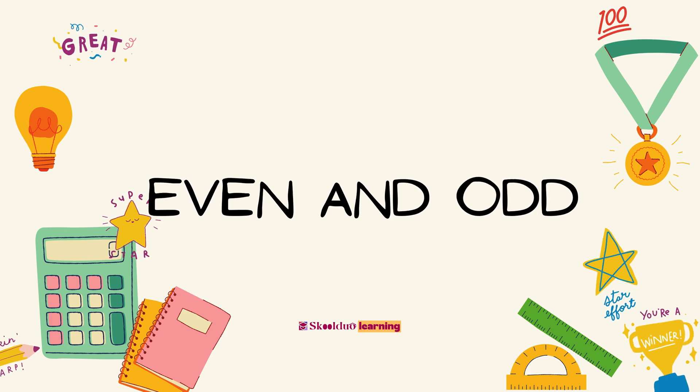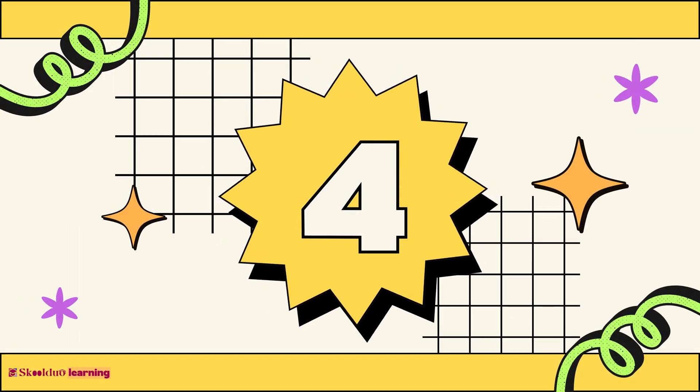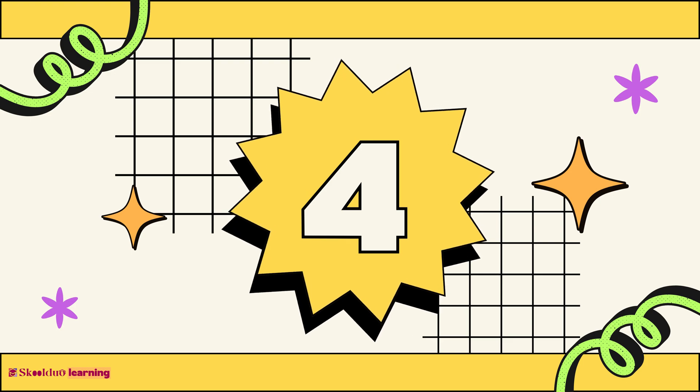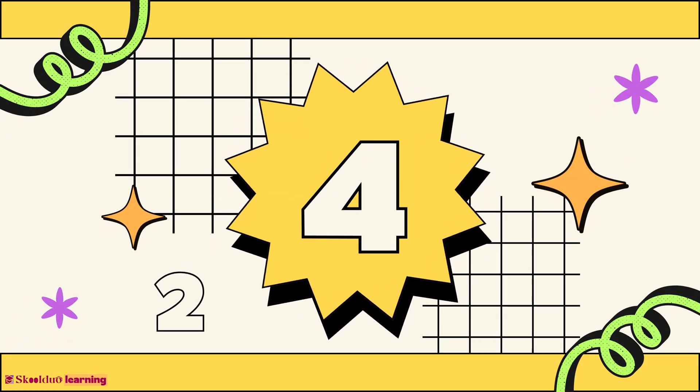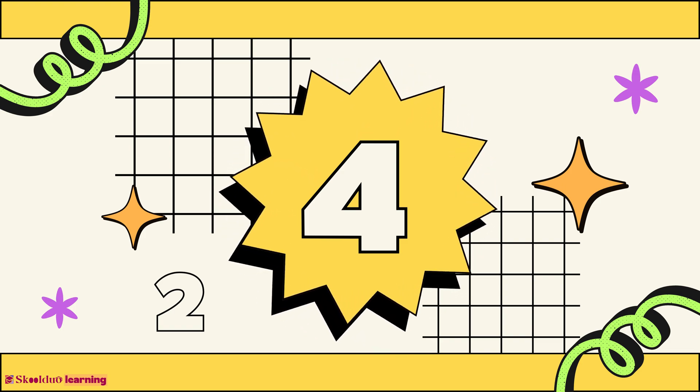Even and odd. Even numbers are numbers that can be divided into two equal whole parts. In other words, even numbers are numbers that when you divide them by two, the answers are whole numbers.